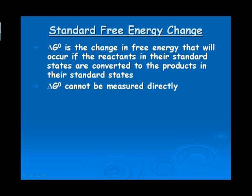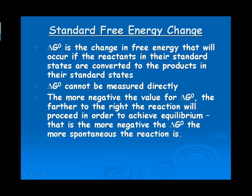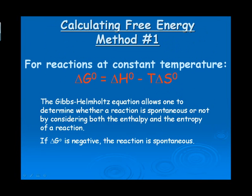The more negative the value for delta G, the farther to the right the reaction goes in order to achieve equilibrium. So basically, the bottom line is the more negative the delta G, the more spontaneous the reaction is. There are three methods by which we can calculate free energy.